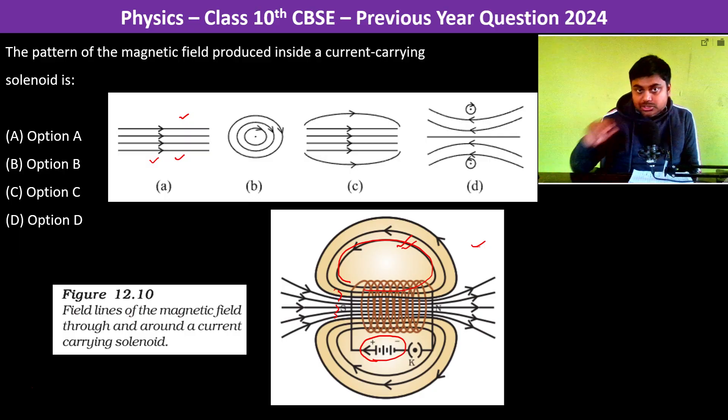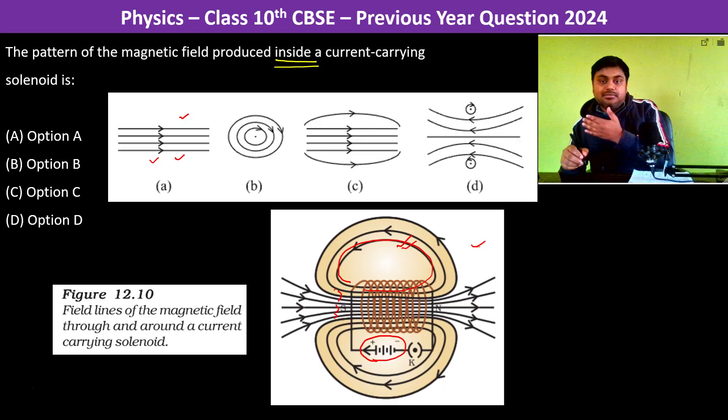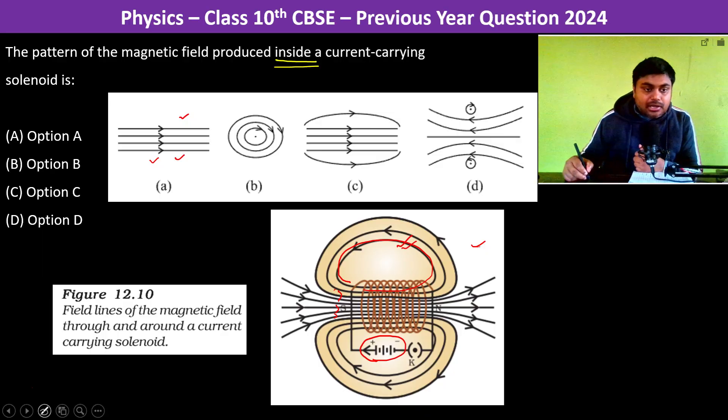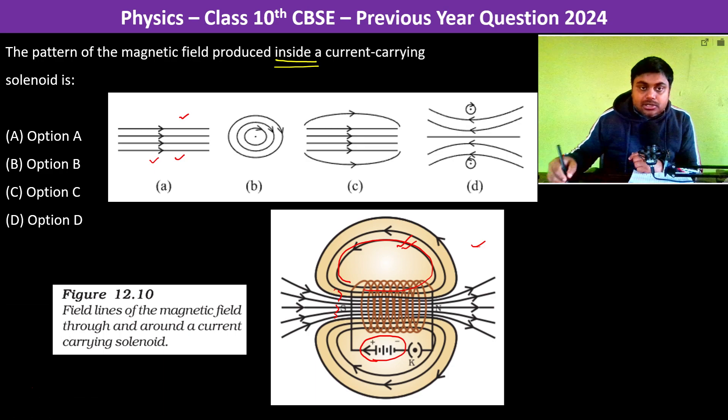It is clearly mentioned that we have to tell inside the current carrying solenoid. Inside it is going to be parallel only. And then outside it is going to form a loop.